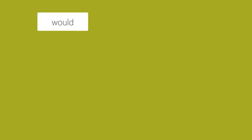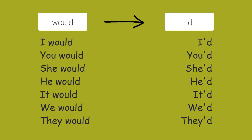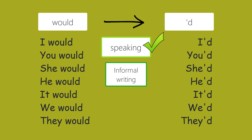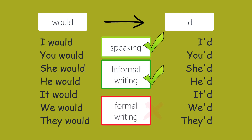The word would is often contracted to apostrophe d by native speakers. It's also acceptable to use this in informal writing. However, in formal written English, we are not allowed to use contractions.